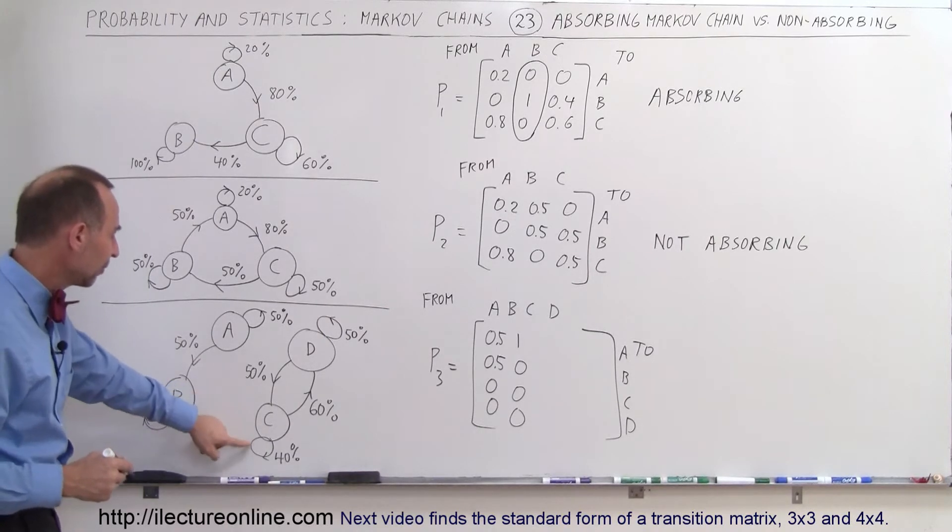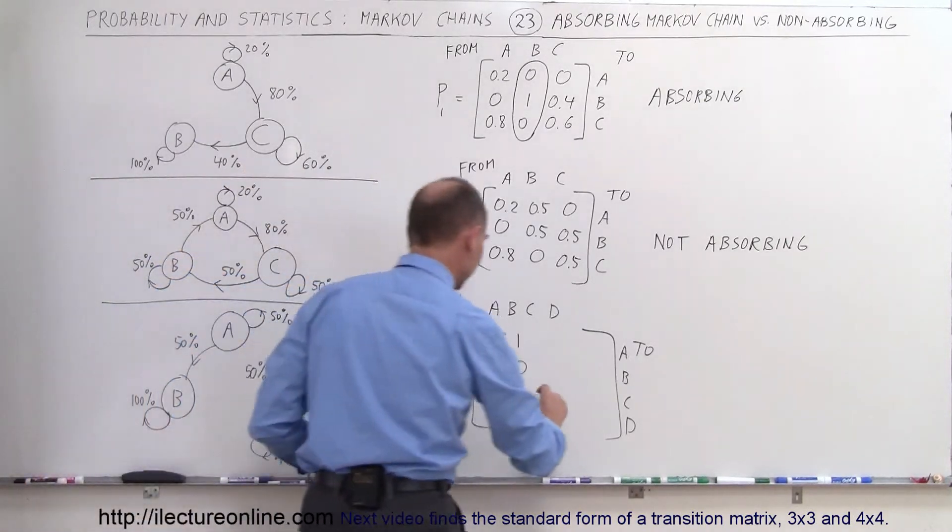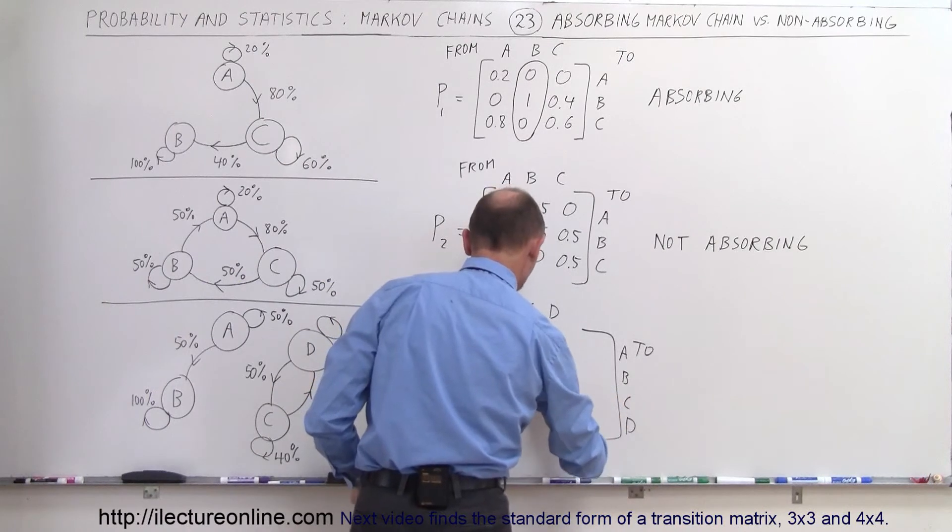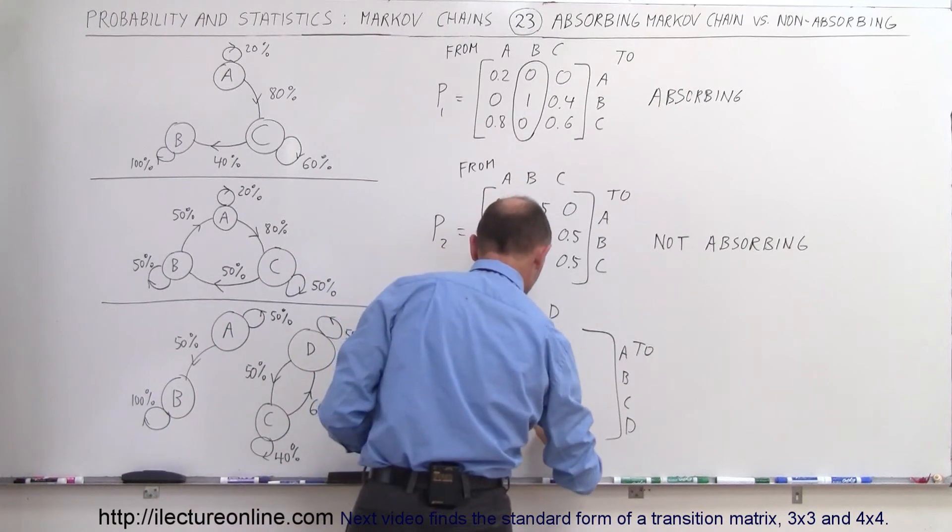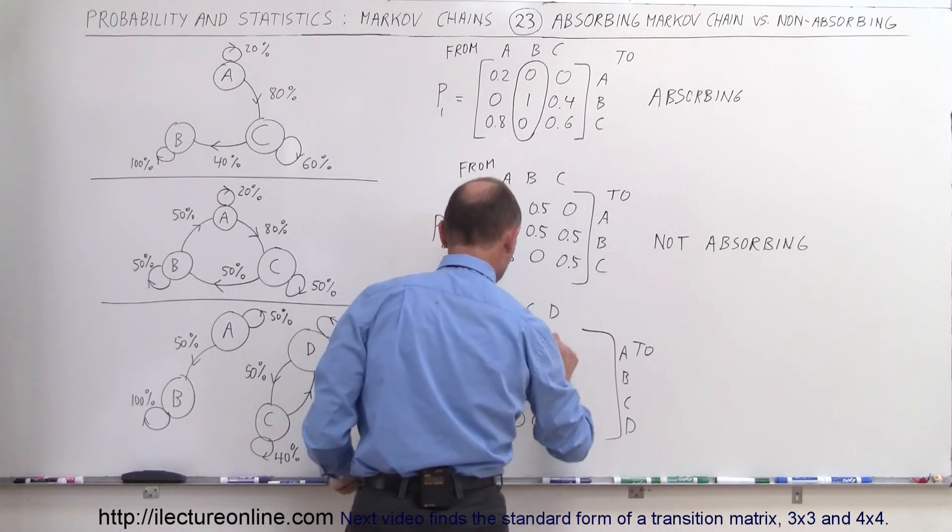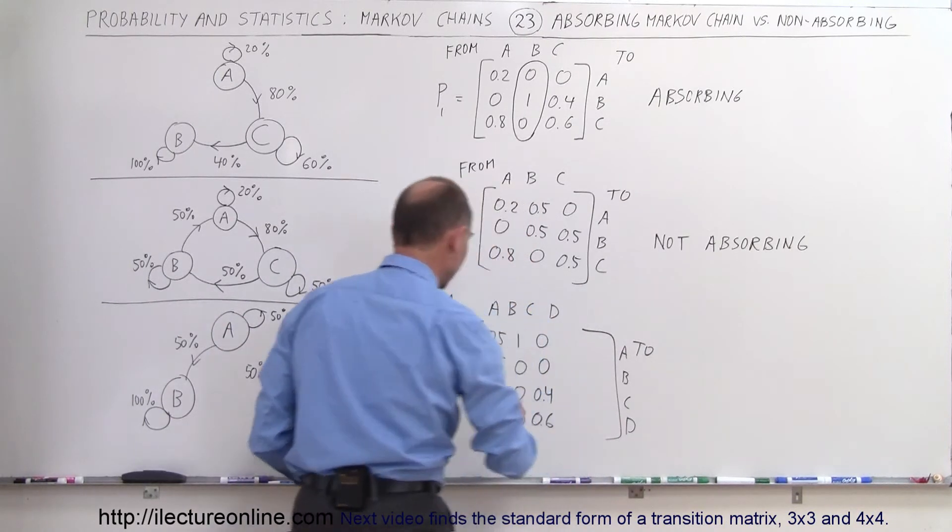Okay, what about C? From C remaining would be 0.4, so from C to C is 0.4. From C to D is 0.6. But none of them go to A or B, that's 0 and 0.